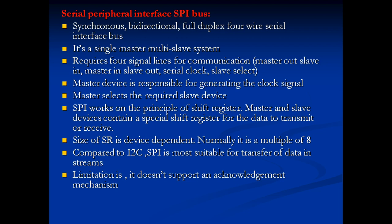SPI — Serial Peripheral Interface — is a synchronous, bidirectional, full-duplex, four-wire serial interface bus. It is a single master-slave system like I2C, but requires four signal lines: Master Out Slave In (MOSI), Master In Slave Out (MISO), Serial Clock (SCLK), and Slave Select (SS). The master device is responsible for generating clock signals and selects the required slave device. It works on the principle of shift registers.